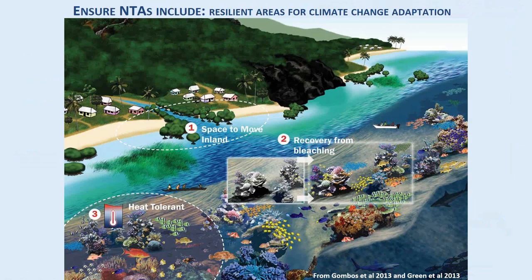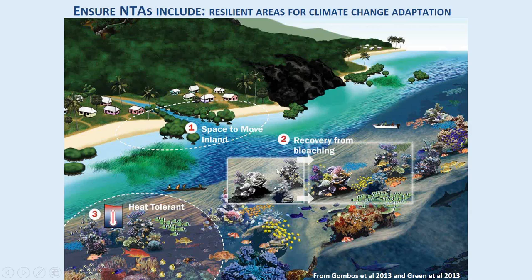We also need to make sure no-take areas include areas most likely to be resilient to the threat of climate change. Some areas are naturally more able to cope with bleaching — resistant areas that don't bleach as badly, or areas that bleach but recover really well and are resilient. When deciding which representative and replicate examples of habitats to protect, try to choose areas that have the best chance of surviving climate change, including coastal systems like mangroves that have somewhere to move as sea levels rise.